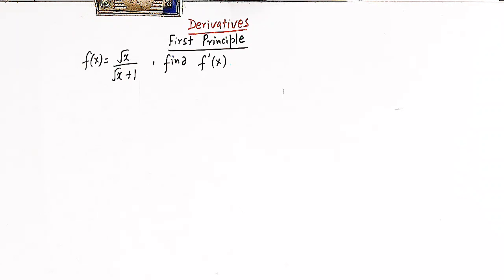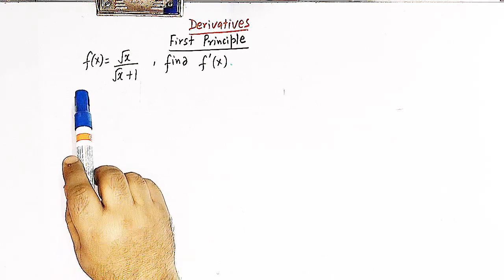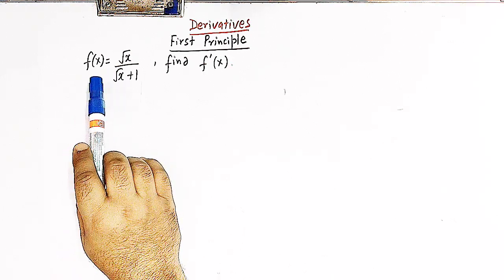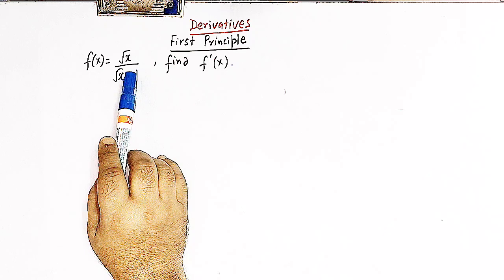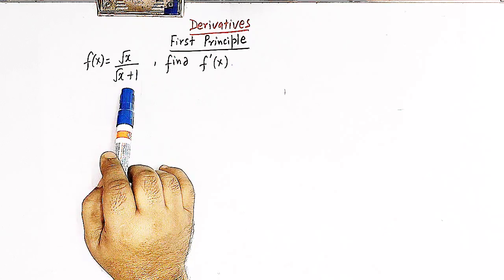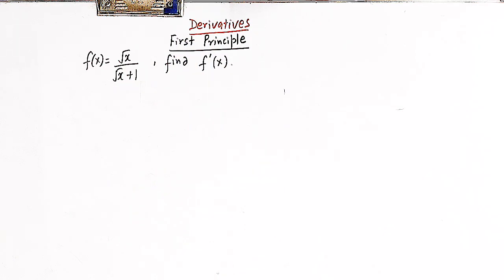Hello viewers. In today's session we are going to discuss one important problem from derivatives. We are going to find out the derivative of the function f(x) = √x / (√x + 1), and we'll find the derivative using the definition of derivative, also known as finding the derivative using the first principle.